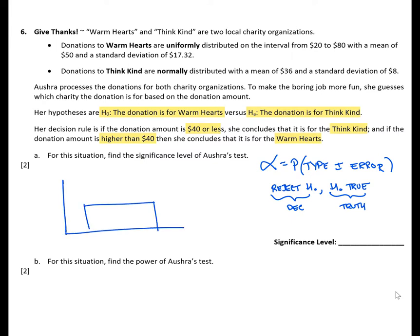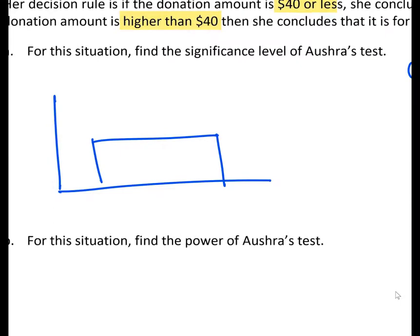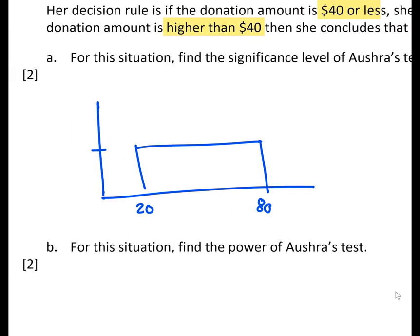A uniform distribution is simply a rectangle. We're told the interval is from 20 to 80, so our minimum point is 20 and our maximum is 80. The height of this distribution is 1 divided by the length of the base. The base is 60 units, or $60, so our height is 1 over 60.